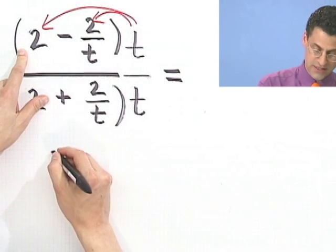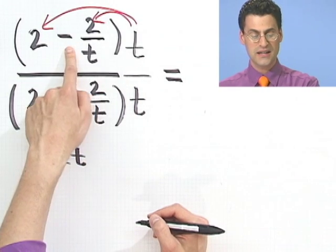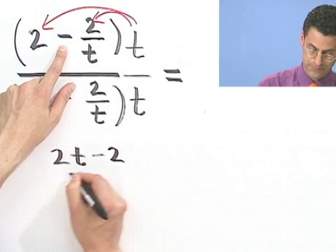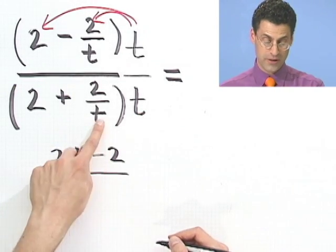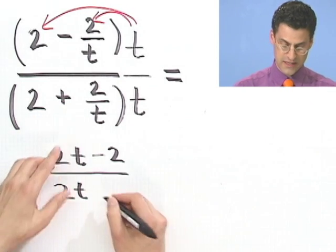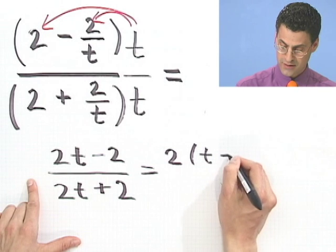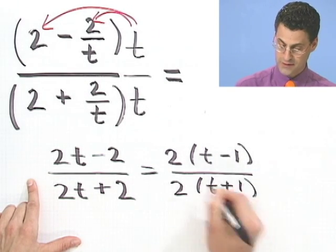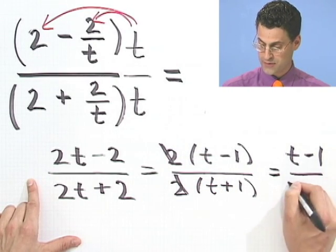When I distribute that t on the top, I see 2t. When I distribute that t to the minus 2 over t, I see a cancellation, so I'm just left with minus 2. On the bottom, when I distribute, I see 2t, and then here I see plus 2. See the common factor of 2 as I saw before: 2 times t minus 1, divided by 2 times t plus 1. A little cancellation, and I'm left with the answer we got before — t minus 1 over t plus 1.